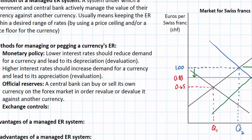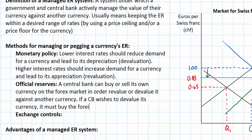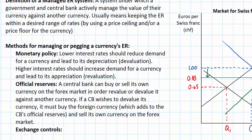To summarize: if a central bank wishes to devalue its currency, it must buy the foreign currency — which adds to the central bank's official reserves — and sell its own currency on the forex market. This leads to a devaluation of the currency. In the case of the Swiss franc, this is exactly what the Swiss National Bank did starting in 2011: buying euros and selling Swiss francs, bringing down the exchange rate to the 83 cent price ceiling that the national bank determined was optimal.